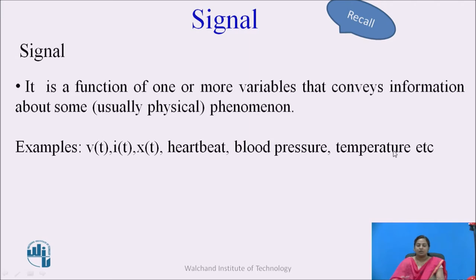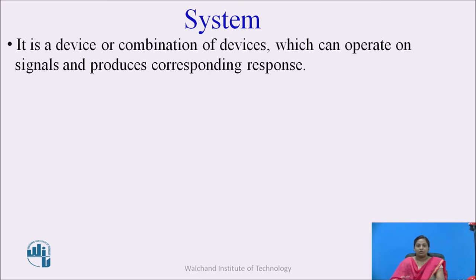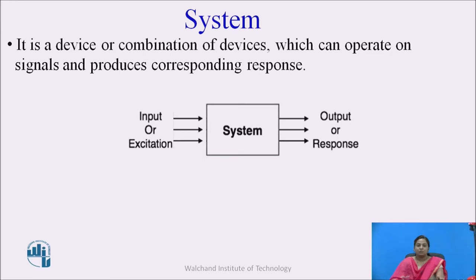These signals are one-dimensional as well as two-dimensional. A system is a device or combination of devices which can operate on signals and produce a corresponding response. This input to the system may be one or more than one. This input is called an excitation, and the output from the system is generally called a response. So x(t) is the input to this system, and y(t) is the output from this system.